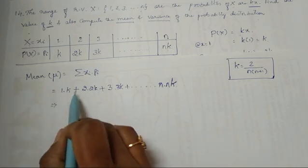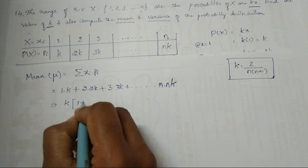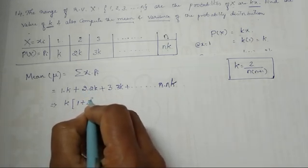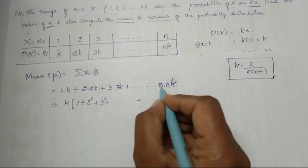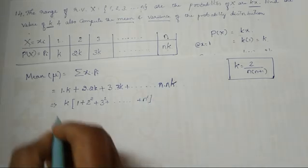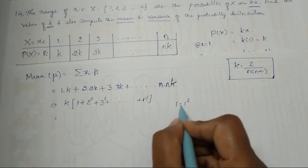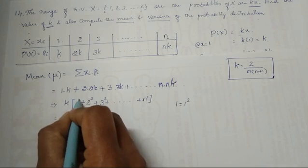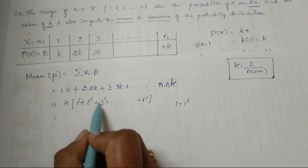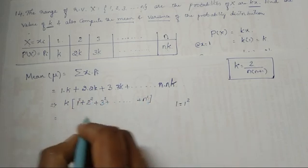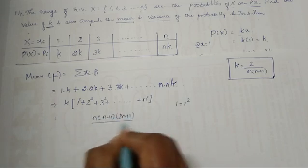Taking k as common: k(1 + 2×2 + 3×3 ... + n×n). We can write these as 1² + 2² + 3² so on up to n². Using the formula for sum of squares of first n natural numbers: 1² + 2² + ... + n² = n(n+1)(2n+1)/6.